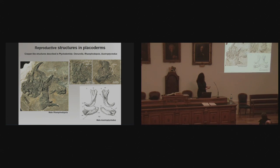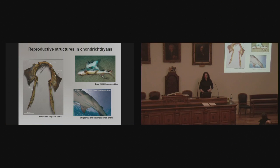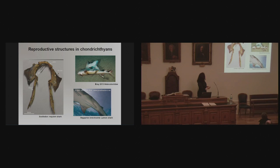In some other ptyctodontids, from Gogo, these structures have a very distinctive curved shape. These were first discovered in Rhamphidopsis in the 1920s and were compared to the claspers in sharks. You probably know that sharks — chondrichthians — the males have extensions of the pelvic fin called claspers, used to transfer sperm to the female. Here's what claspers look like in a typical shark — here's the pelvic fin skeleton, we have the pelvic girdle, here we have the fin, and the clasper attaches to the end of the fin and extends backwards to transfer sperm into the female.